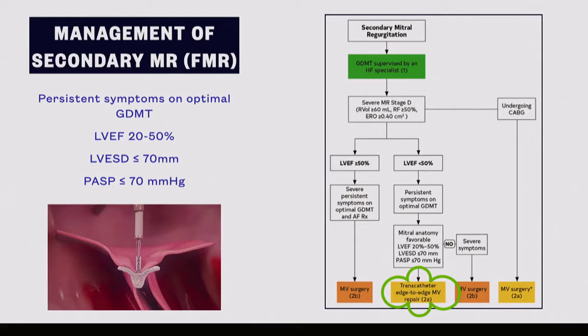We need to select patients based on the COAPT trial. If the patient fits the COAPT criteria, they will do better with MitraClip. If the patient resembles a MITRA-FR trial patient, they might not do as well. Key criteria: EF between 20-50%, and most importantly LV end-systolic dimension should be less than 70mm — you don't want to treat an LV that looks like a football.